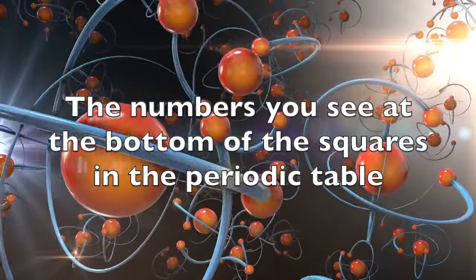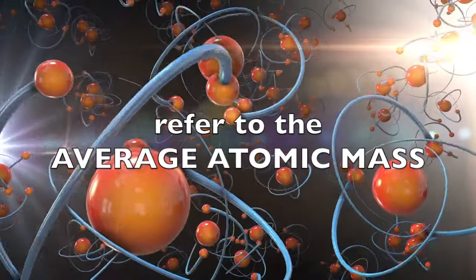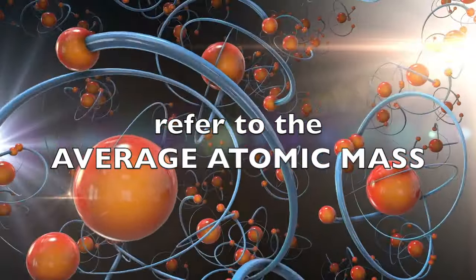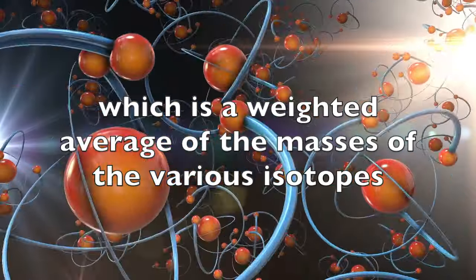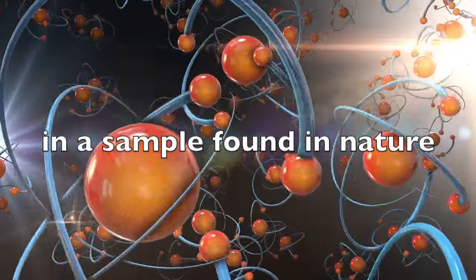In summary, the numbers you see at the bottom of the squares in the periodic table refer to the average atomic mass, which is a weighted average of the masses of the various isotopes in a sample found in nature.